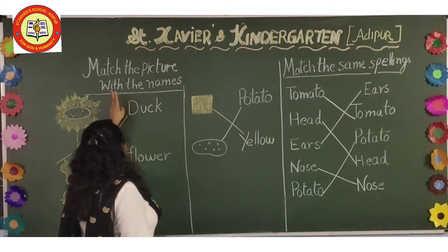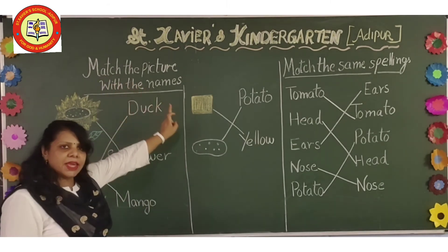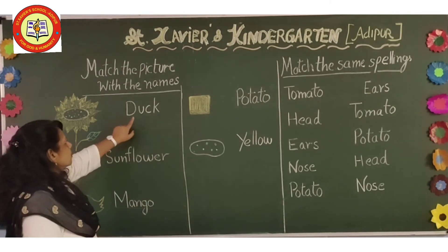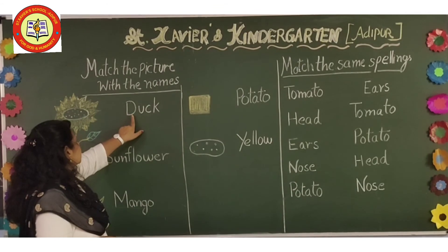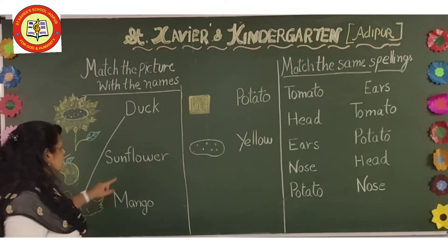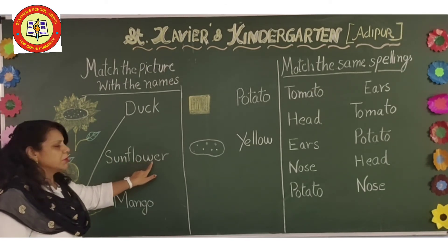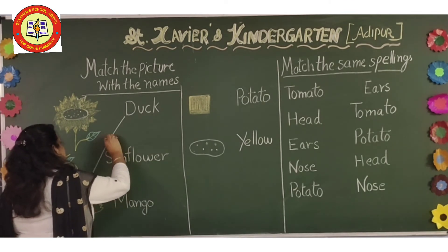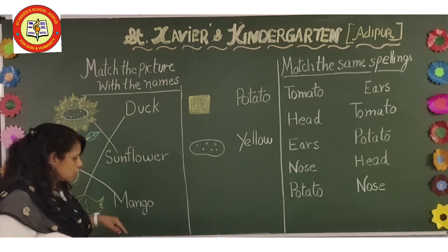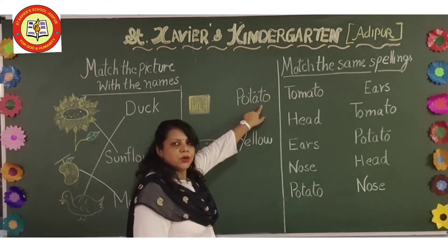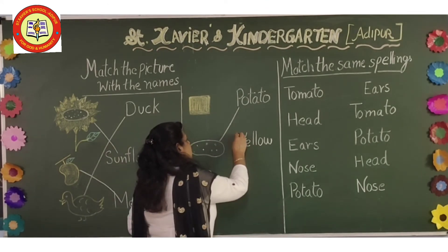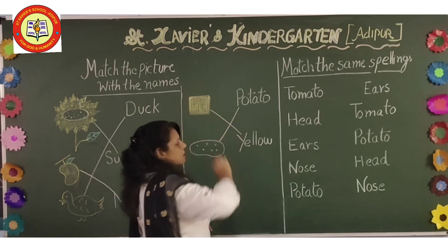So children, the first activity is match the picture with the names. So here are some pictures: sunflower, mango and duck. And these are spellings. D-U-C-K duck, so we have to match here. S-U-N-F-L-O-W-E-R sunflower, so we have to match it here. Then M-A-N-G-O mango, so we have to match here. Then P-O-T-A-T-O potato, so we have to match here. Then Y-E-L-L-O-W yellow — yellow is a color — so we have to match it here.